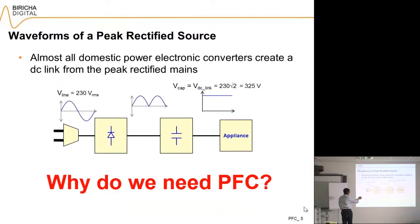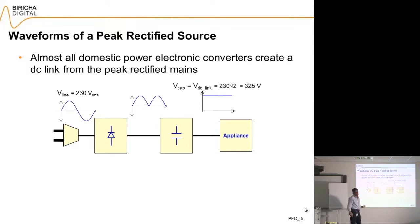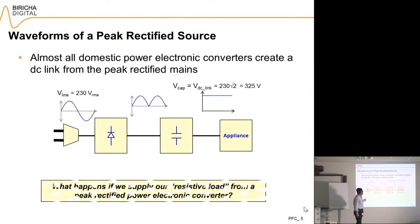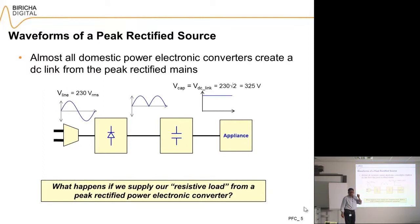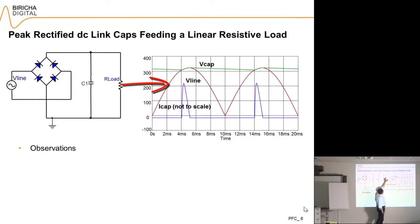Power factor correction forces our equipment to shape the current so that it is sinusoidal as opposed to non-sinusoidal. To understand what is wrong with non-sinusoidal current, consider this: you have the mains at 230 V RMS, you rectify this, get a rectified sine wave, and then it goes through a bank of capacitors — a peak rectifier — giving you the peak voltage of 325 V on the DC link, which feeds the appliance. Even if the appliance is just a resistor, like a kettle or a bar heater, the current will look very peaky.